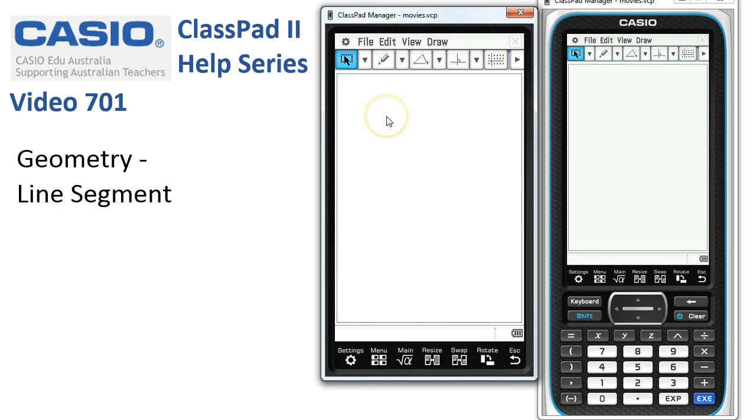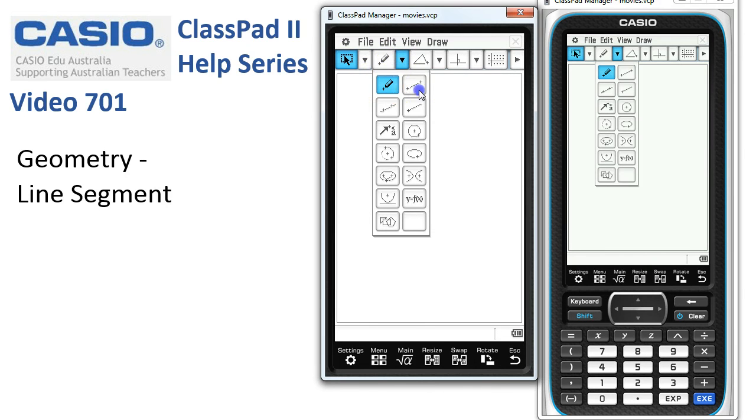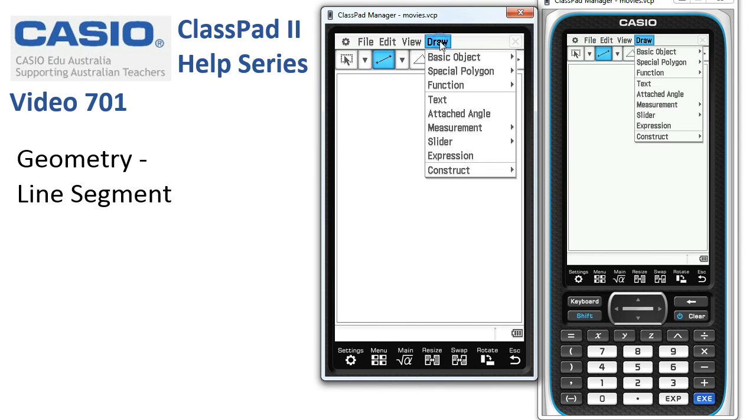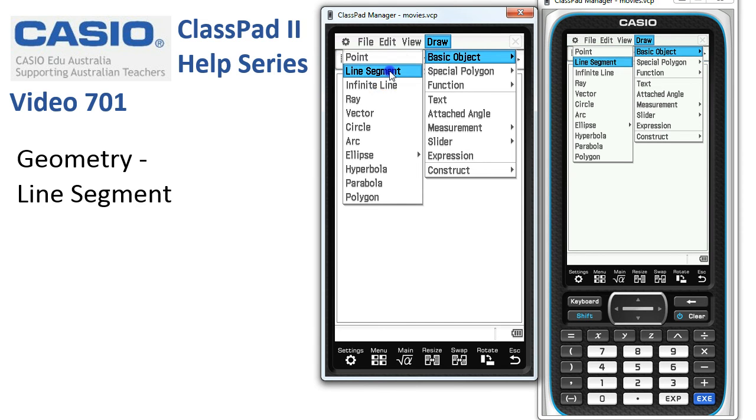Now the line segment tool we can access in a couple of ways. We can simply choose it from this drop down menu, here it is, the top right one, or we can tap on Draw Basic Object Line Segment.